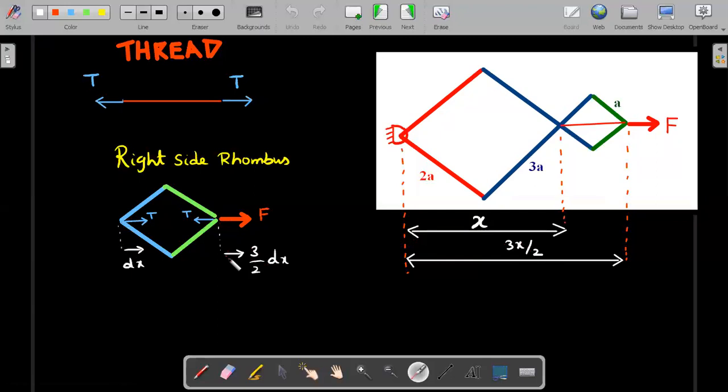And then this particular point would be moving towards right by 3 by 2 dX. Please do understand that these two displacements tend to zero, but they tend to zero in a different ratio. So this one tends to zero much faster as compared to this particular point. That's the crux of this problem.